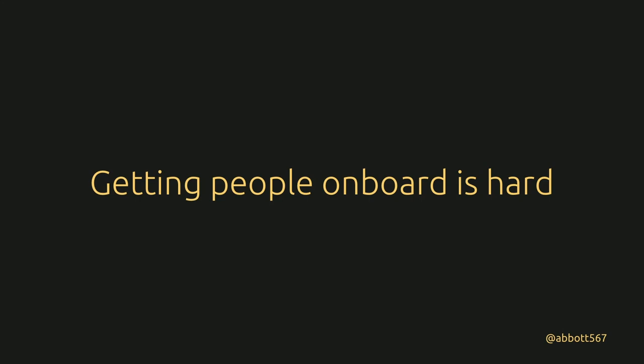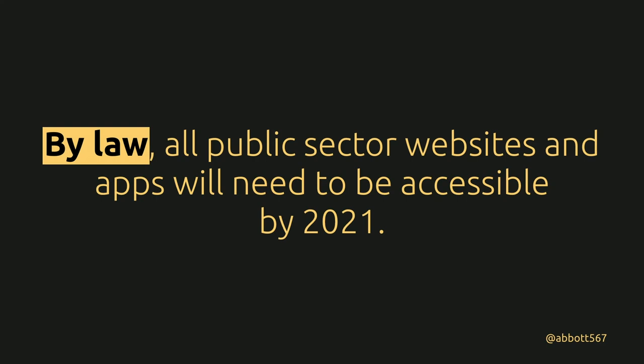Getting people on board with accessibility is hard — people say they don't have the time or budget. Where I work it's easier because it's the law. Websites created after 23rd September 2018 need to comply by 2019; those created before that date need to comply by 2020; and apps need to comply by 2021. If you work in government and you don't do this, you're going to be in real trouble. It doesn't filter through to the private sector yet, but that doesn't mean you shouldn't be doing this stuff.